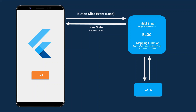The BLoC component contains two core things: the first is initial state, which shows the initial state of your application, and a mapping function which takes an event as input and produces a new state as output. Regarding streams and sinks: your BLoC contains a stream of new states, it accepts events as input and recreates a new state in a stream. Your application acts as a sink which consumes the new state.